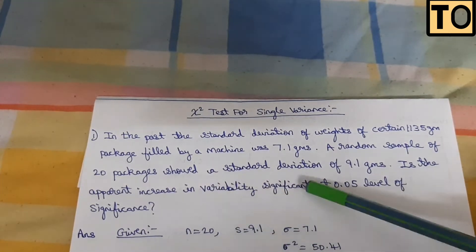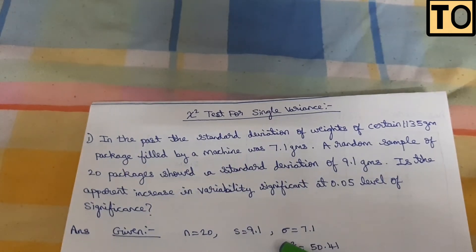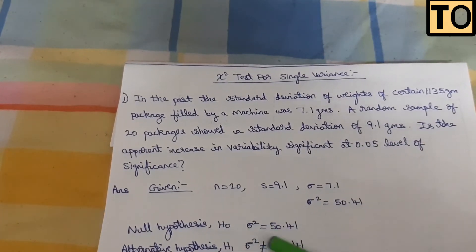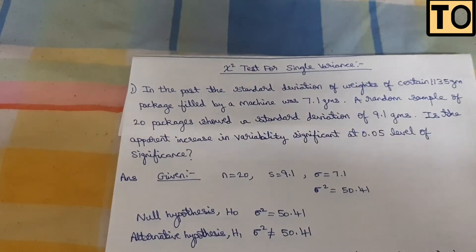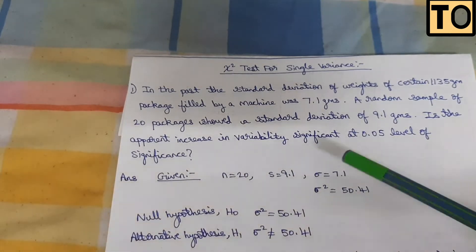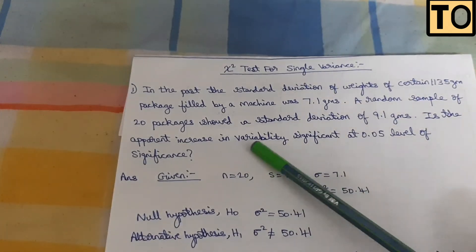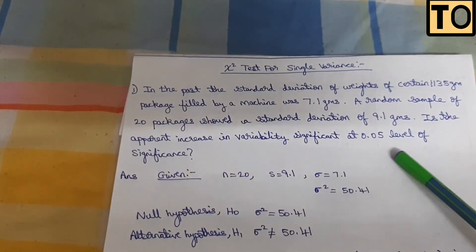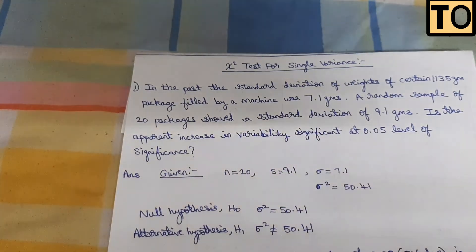The null hypothesis is H0: sigma squared equals 50.41. The alternate hypothesis is based on the apparent increase in variability at 0.05 or 5% level of significance. Since we're testing if it's greater than, this is a one-tail test.